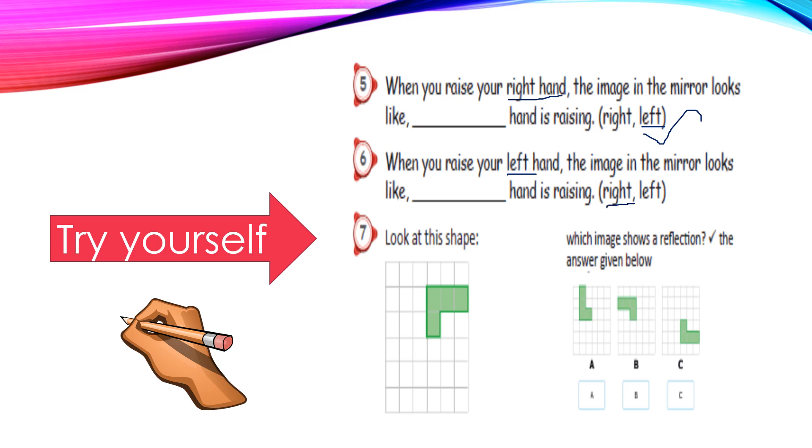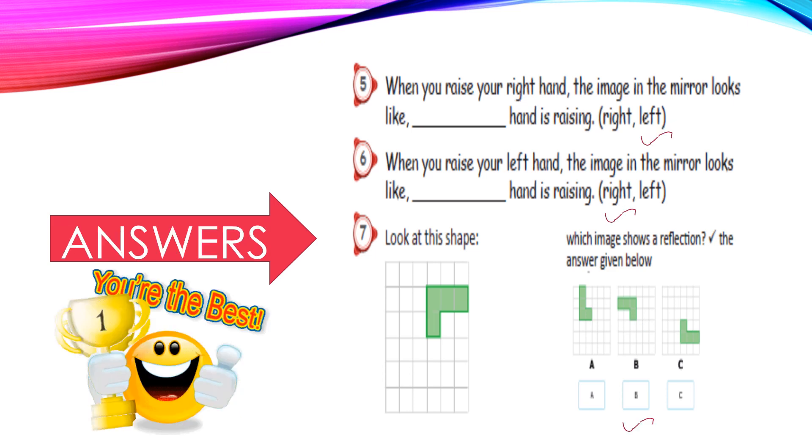Look at the shape. Which image shows the reflection? Tick the answer given below. In the image, how do you find the reflection? Which is related to this shape? If this one not, not. Yes, this one only correct. So answer B is the correct answer. Check your answer here. Yes, you are the best.